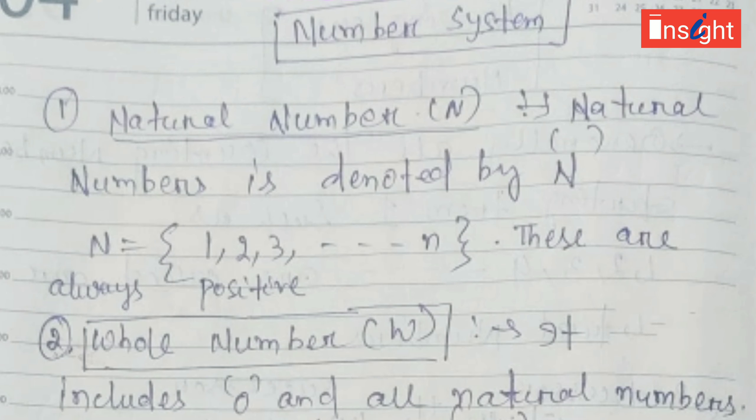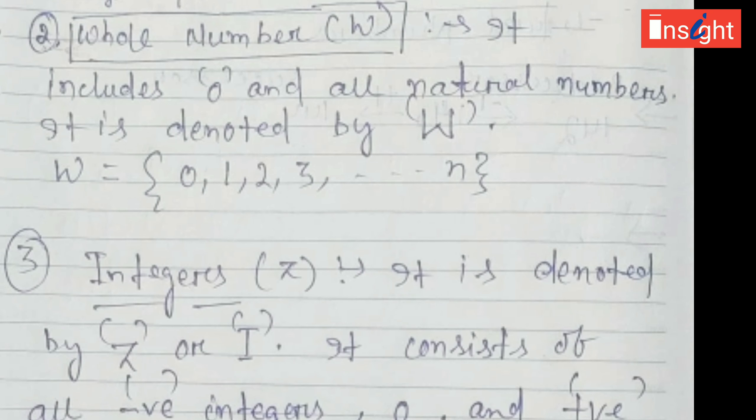Good morning students, today we learn about number system. Inside number system, the first is natural number N, denoted by capital N. All the counting numbers such as 1, 2, 3, and so on are included inside the natural number. These are always positive.